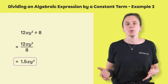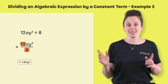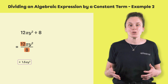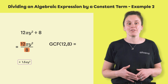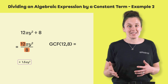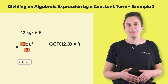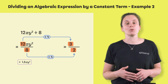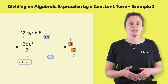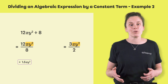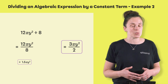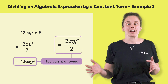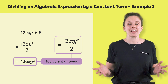It is also possible to obtain a simplified fraction. Instead of dividing 12 by 8, we simplify the 12/8 fraction. To do this, we must find the greatest common factor of 12 and 8. In this case, the GCF is 4. Therefore, we divide 12 by 4, which equals 3, and 8 by 4, which equals 2. The xy² variables remain the same, so the simplified form is 3xy² over 2. The two answers we found are equivalent. However, fractions are preferred to decimals because they are more precise.